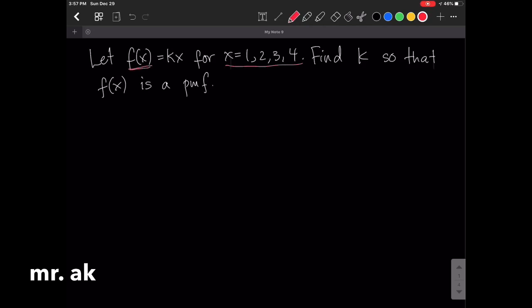To find for the value of k, this function should satisfy the second condition of a probability distribution.